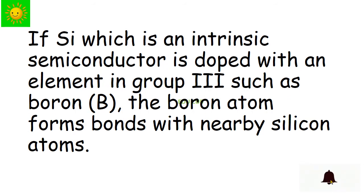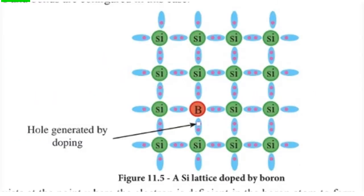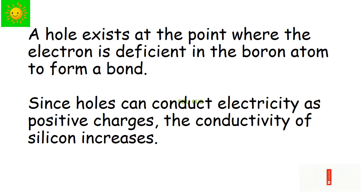If silicon, which is an intrinsic semiconductor, is doped with an element in group 3 such as boron, the boron atom forms bonds with nearby silicon atoms. However, since there are only 3 electrons in the outermost shell of the boron atom, there is a deficiency of 1 electron in order to form 4 bonds. You can see a silicon lattice doped by boron. A hole exists at the point where the electron is deficient in the boron atom to form a bond.